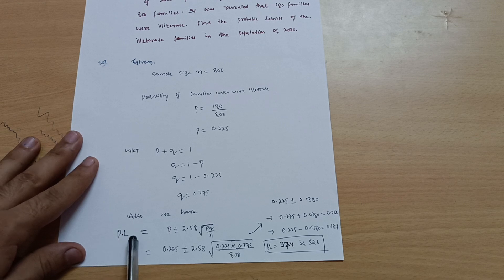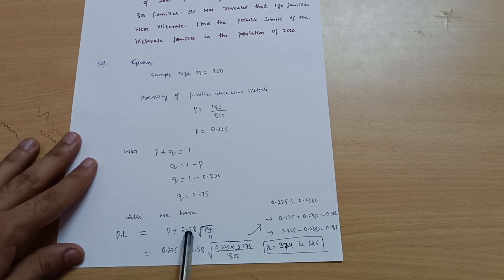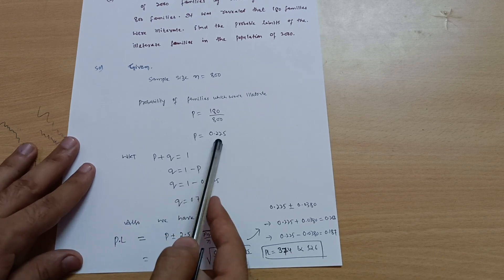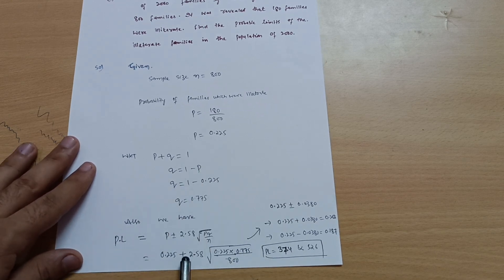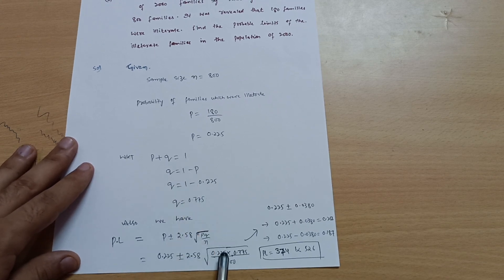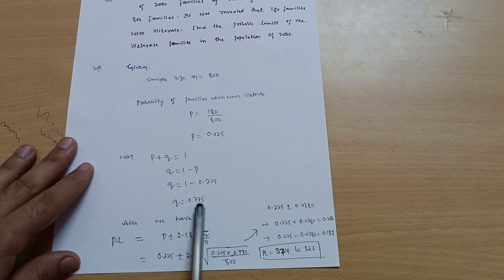The probable limits formula is p plus minus 2.58 root of pq by n. Probability we have already calculated: 0.225 plus minus 2.58 root of p value is 0.225 multiplied by q value 0.775 divided by total number of samples that is n, so 800.